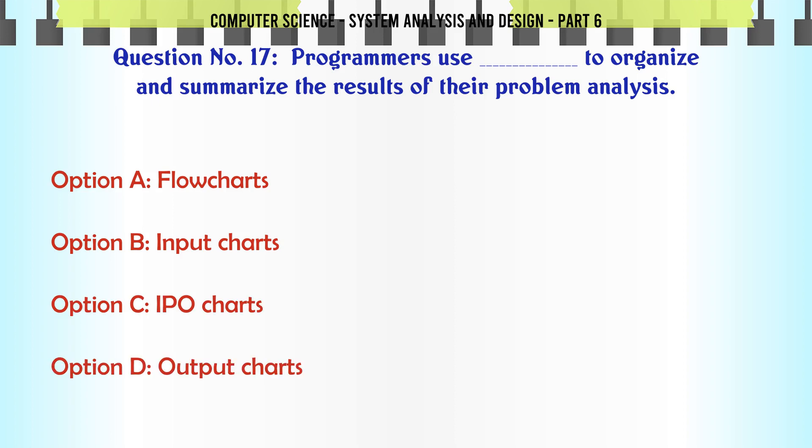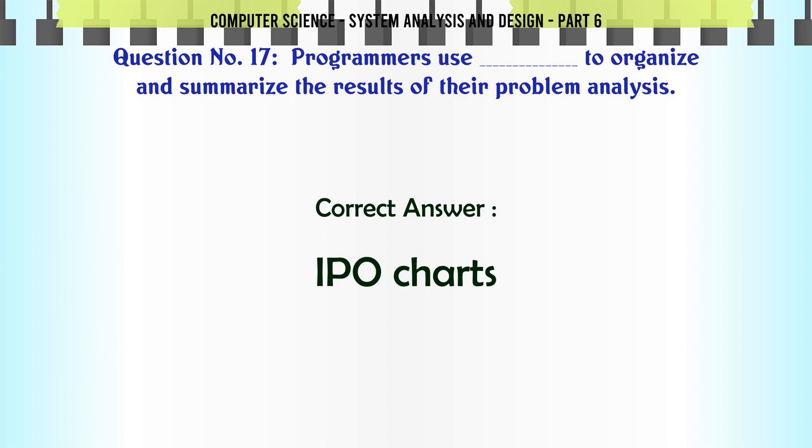Programmers use to organize and summarize the results of their problem analysis: A. Flow charts, B. Input charts, C. IPO charts, D. Output charts. The correct answer is: IPO charts.